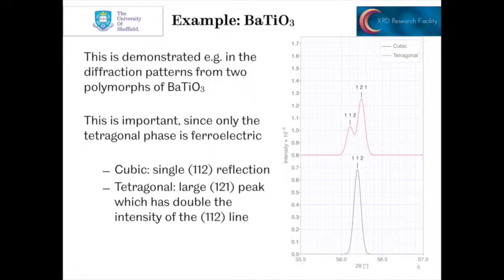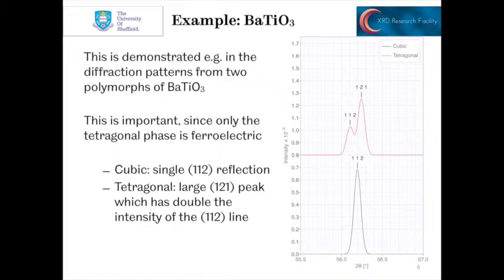A good way to demonstrate this is to take the diffraction patterns from two polymorphs of barium titanate. You can see at the bottom on the right we've got the 1,1,2 reflection from the cubic phase. And then if we go to the red pattern, we can see for the tetragonal — where A equals B but doesn't equal C — we see a big 1,2,1 peak which has double the intensity of the 1,1,2 reflection. With the 1,1,2 we have six peaks overlapping, and with the 1,2,1 in the tetragonal we have four peaks overlapping, and the 1,1,2 in the tetragonal has two peaks overlapping, so we have this 1 to 2 ratio.